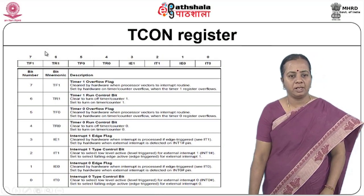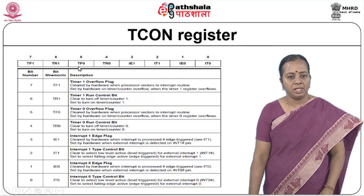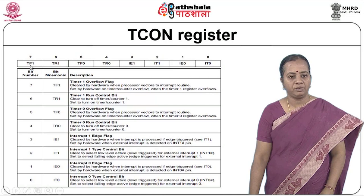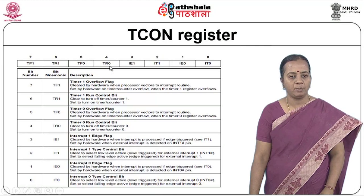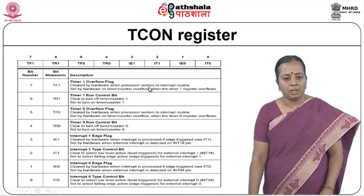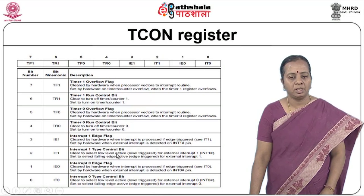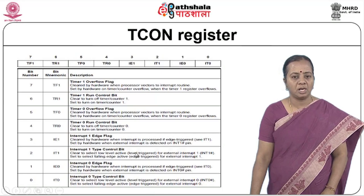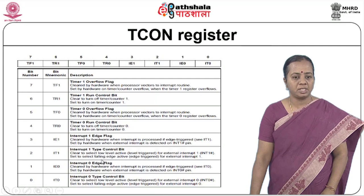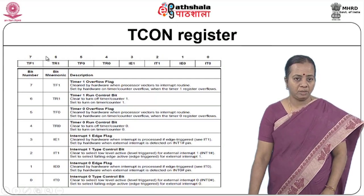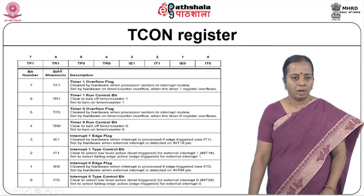The TCON register configuration: TF1 is the overflow flag for timer 1 — if it overflows, this is set to 1. TR1 is the timer run control bit for timer 1. TF0 is the timer 0 overflow flag, and TR0 is the timer 0 run control bit. The lower nibble is meant for interrupt-based communication. IE1 is interrupt 1 edge flag, IT1 is interrupt 1 type control bit, used when the external input is used as an external interrupt. These four bits are very important when operating in timer mode.